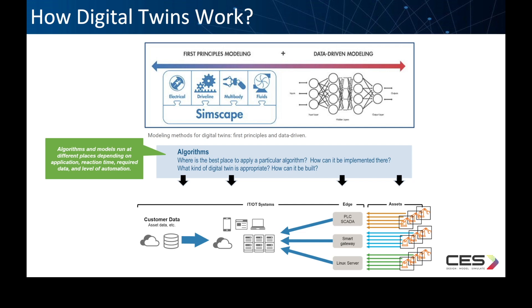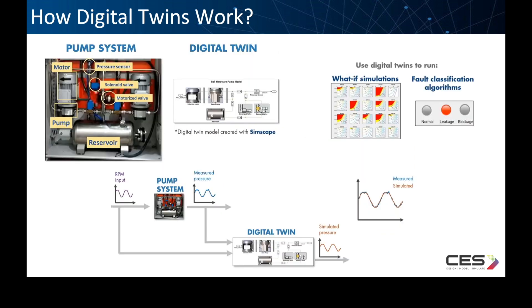A digital twin can also be a composite of various model behaviors and modeling methods, and is likely to be elaborated over time as more uses are identified. The models must be kept up to date and tuned to the assets that are in operation, which typically involves directly streaming data from the assets into these algorithms. These algorithms tune the digital twin.